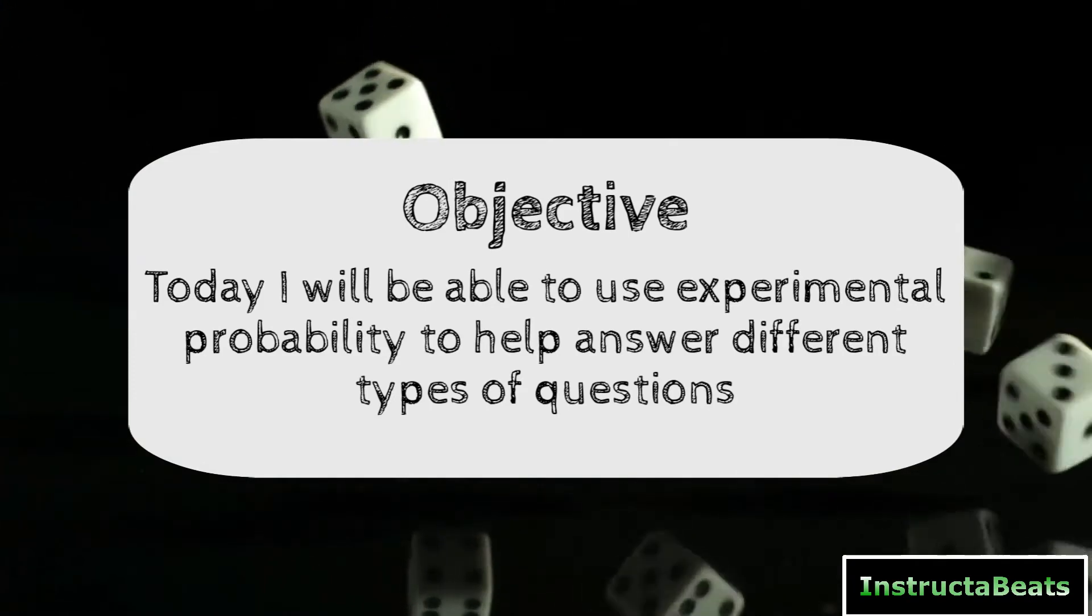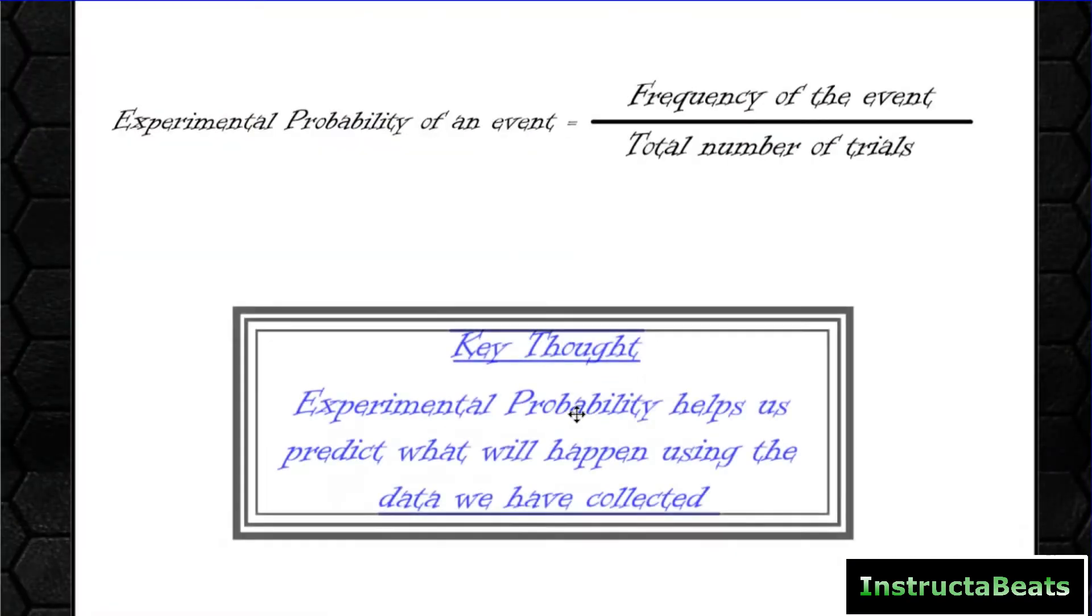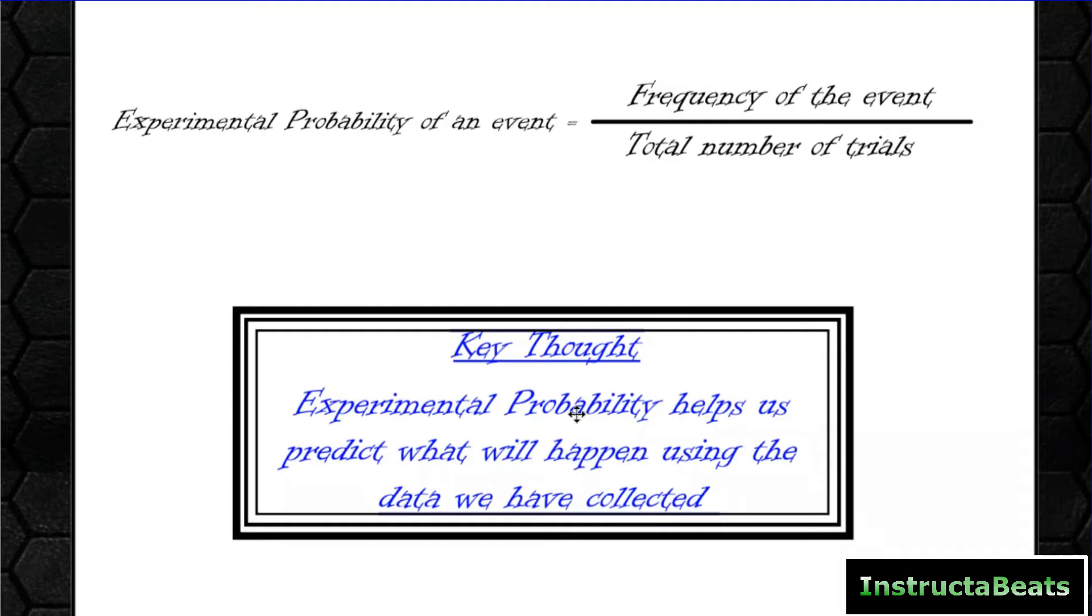So let's review some of the things we learned last lesson, which leads us to our key thought for experimental probability. Experimental probability helps us predict what will happen using the data we have collected. So you start off with a theoretical probability, you make that prediction about what you think is going to happen based on the math. And then you do some trials and you come up with an experimental probability. Because we know that real life doesn't always match what we predict.